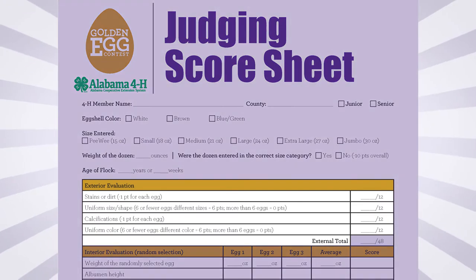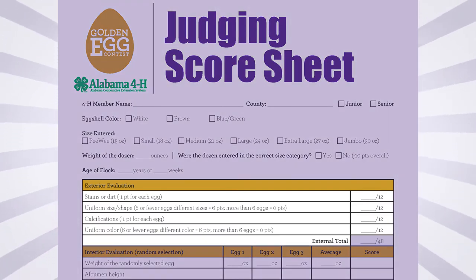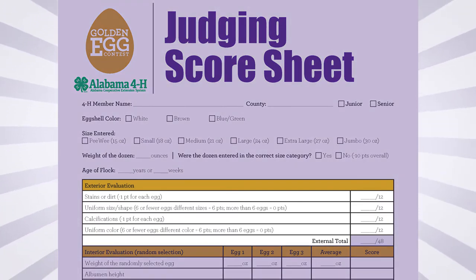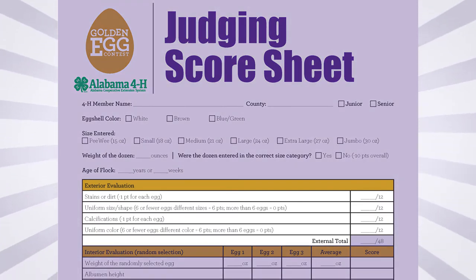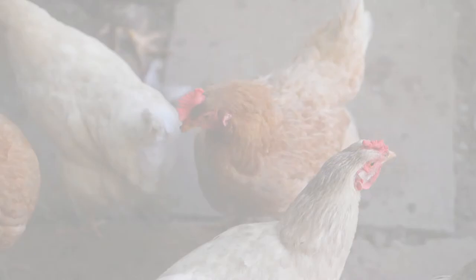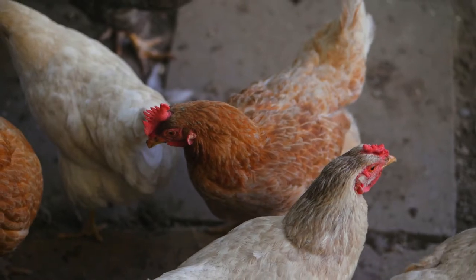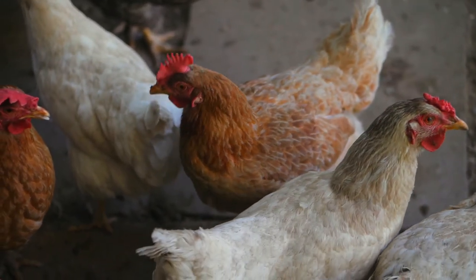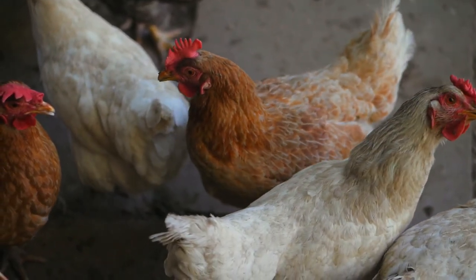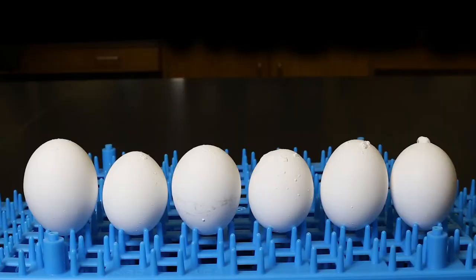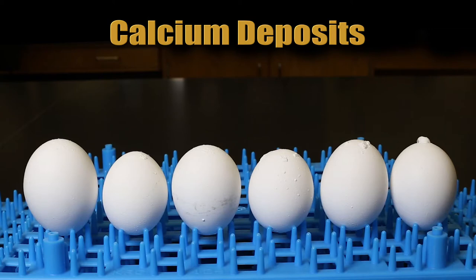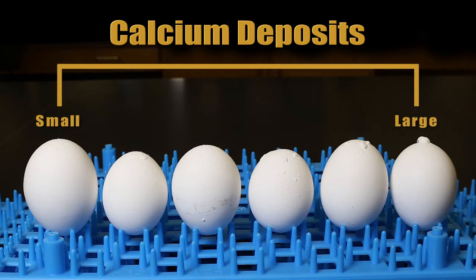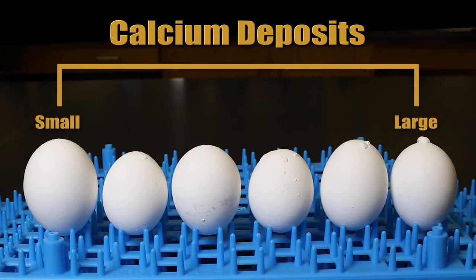First, let's discuss the exterior characteristics to consider when evaluating your eggs. Hens will occasionally lay calcium deposits — tiny mistakes in shell structure. These eggs have calcium deposits or calcifications. They can range from very small, sandy surface deposits to very large ones.